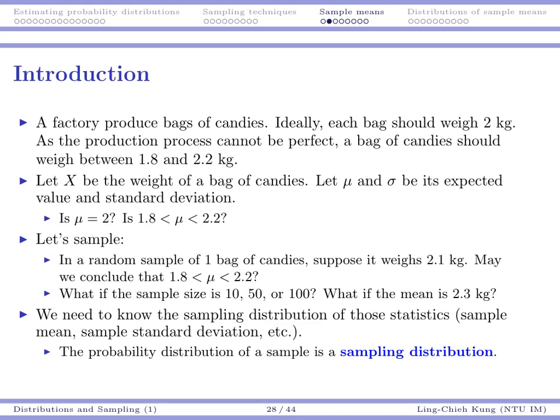I certainly understand that as long as there is sigma, there is some randomness, and there may be some candy bags that are not within the quality standard. But at least I hope my mu is within 1.8 and 2.2. So to answer these questions, I probably want to do some sampling. If I get one bag of candy and I see it weighs 2.1 kilograms, may I conclude that my mu is within 1.8 and 2.2? Probably not, because it's just one sample and there is no reason to conclude that mu is really within 1.8 and 2.2.